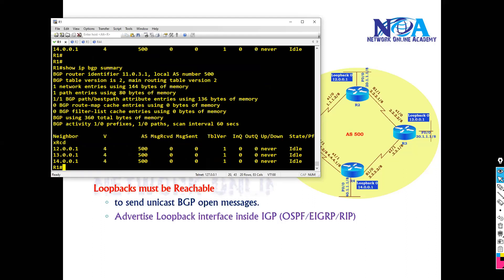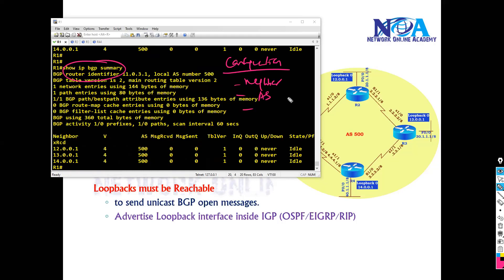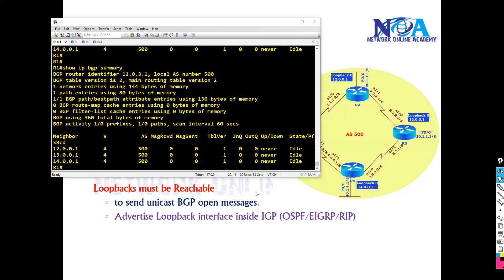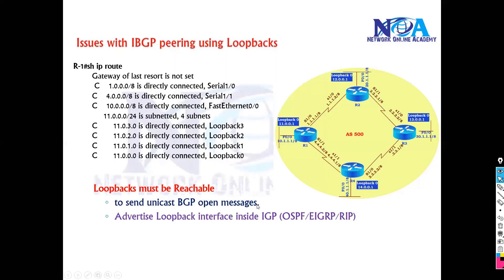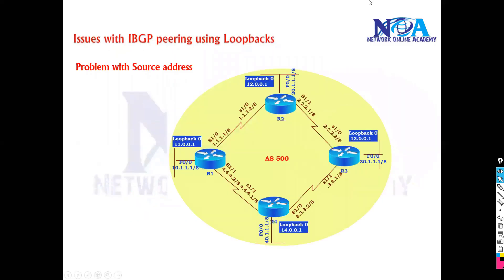I can see there is still no neighborship established. As per my configurations, the neighbor statements are configured on both sides, the AS number is configured correctly, the IP address is configured correctly, and the loopbacks are reachable — all these things are properly configured, but still the neighborship is not coming up. There is one more problem: the problem with the source address.